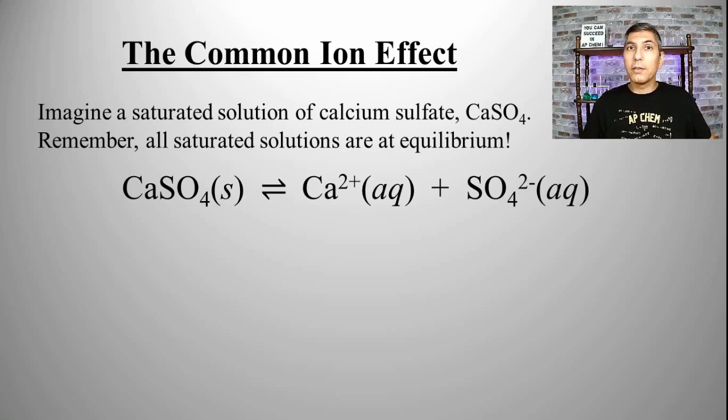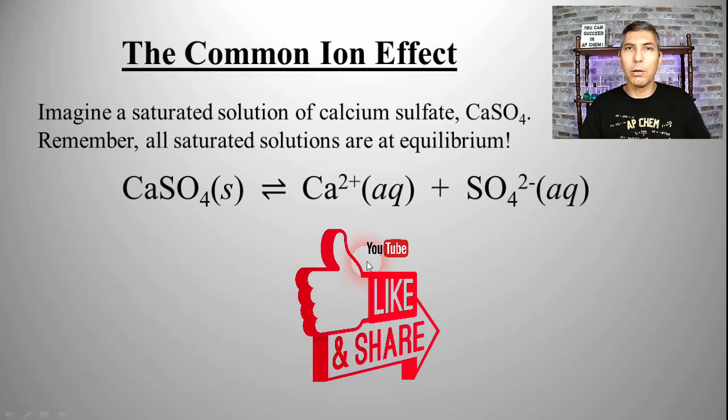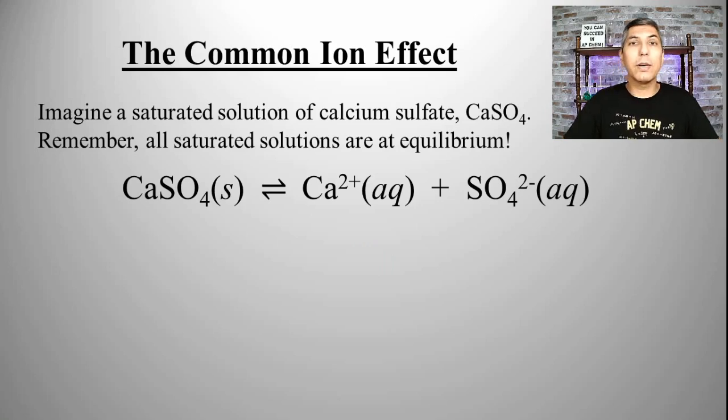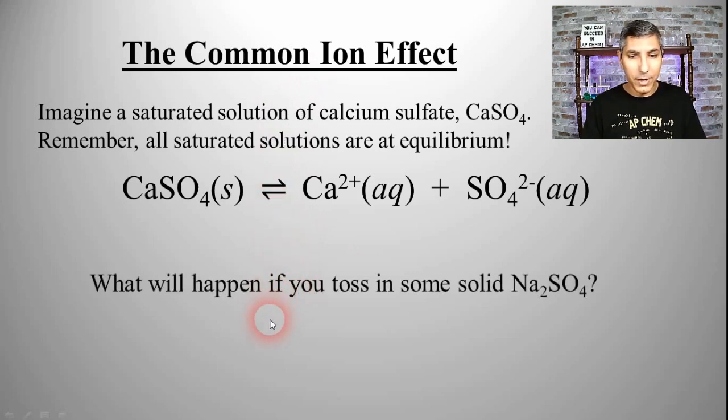Sometimes we're trying to dissolve a solute into water that already has an ion in there. Let's imagine that we have calcium sulfate. Calcium sulfate isn't that soluble to start with, but let's imagine that we have a saturated solution of calcium sulfate, CaSO4. Like we learned in the last video, all saturated solutions are at equilibrium. That's why we have this double-headed arrow here to show that we have an equilibrium going on.